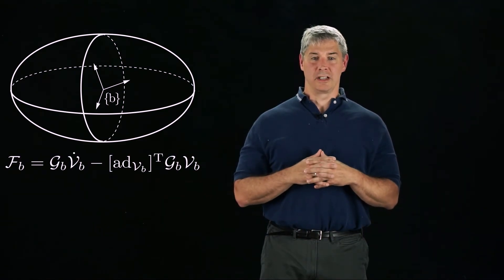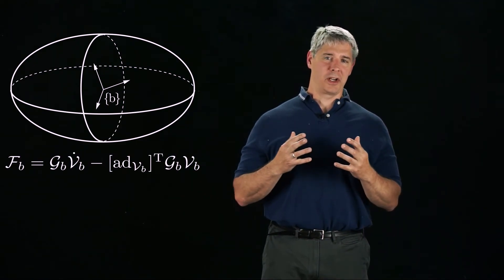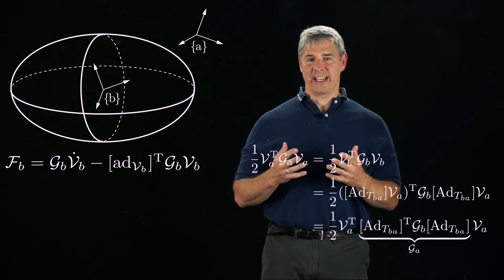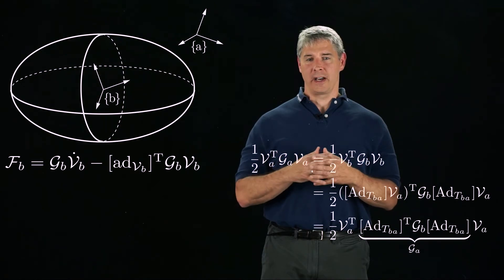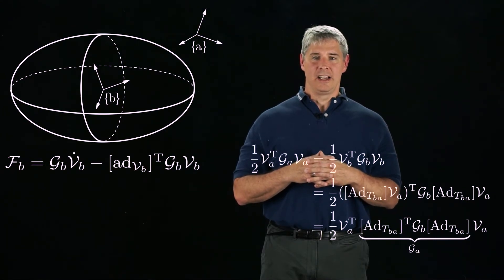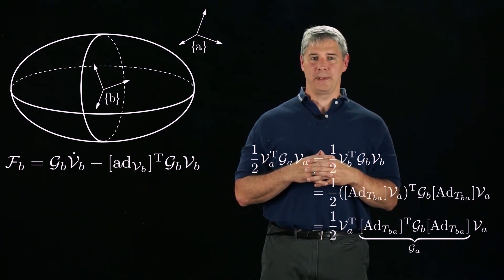Now that we have the equation of motion in the B frame, we could ask what the equation of motion is in a different frame, A. Equating the kinetic energy expressed in each frame, we find an expression for the 6x6 spatial inertia matrix expressed in the A frame, GA, in terms of the GB matrix in the transform TBA expressing the A frame and the B frame.